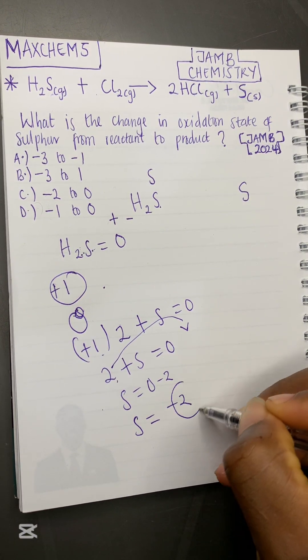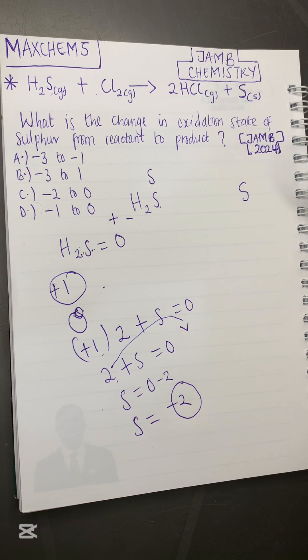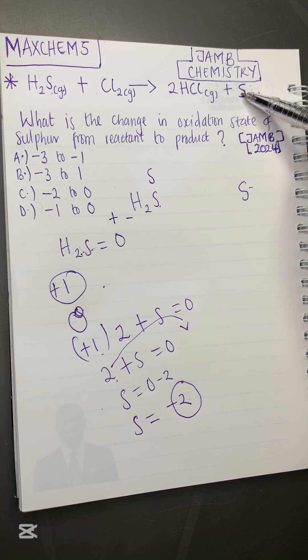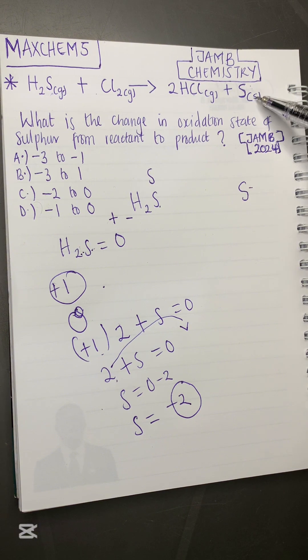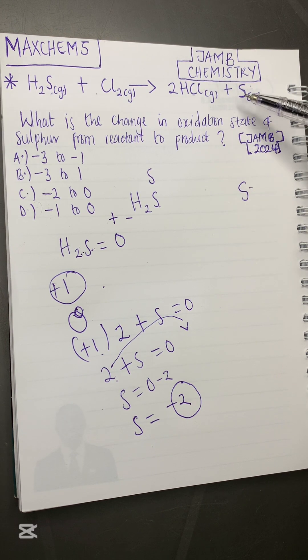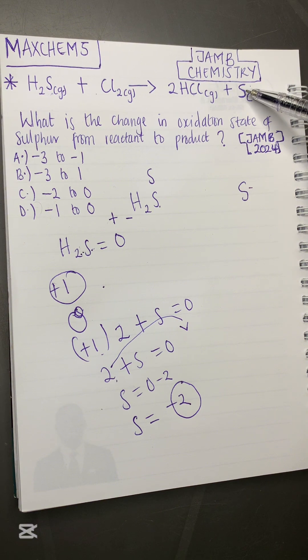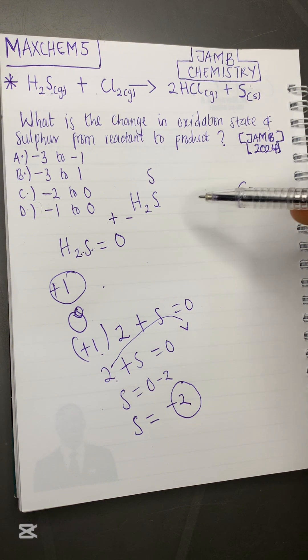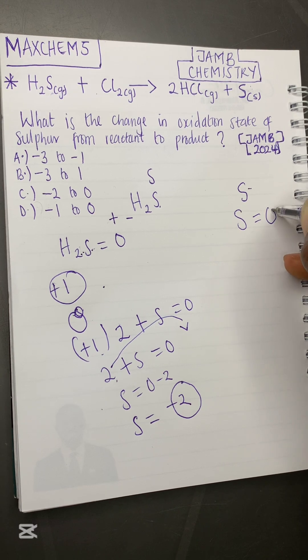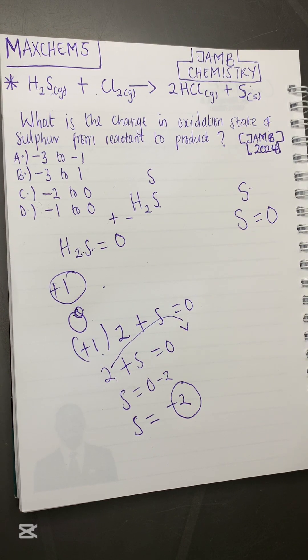At our product side, sulfur is standing on its own as a sulfur element or as a sulfur atom in sulfur solid. According to the law of valency, any element or any atom that is standing on its own and does not have a charge—you can see sulfur here does not have a charge, it does not have any positive or negative charge—that means the oxidation state is zero. We should know that an uncombined element that does not have any charge has an oxidation state always equal to zero.